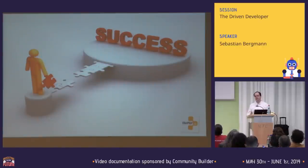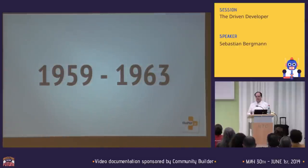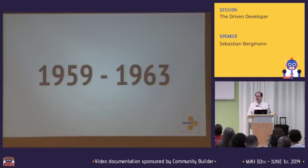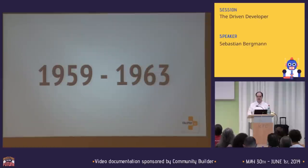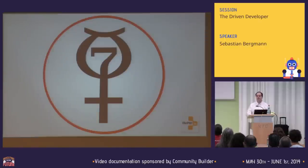We started in 1947 with the bug, and we don't want bugs. How can we prevent them? Probably the first big software development project about which we know how they developed software ran from 1959 to 1963. Any guess what a big software project might have been in the late 50s, early 60s? Something at NASA — a really good guess. It was the Mercury project.